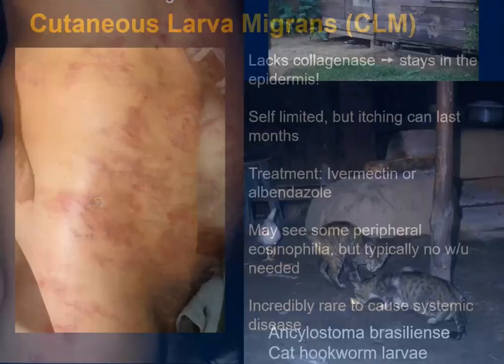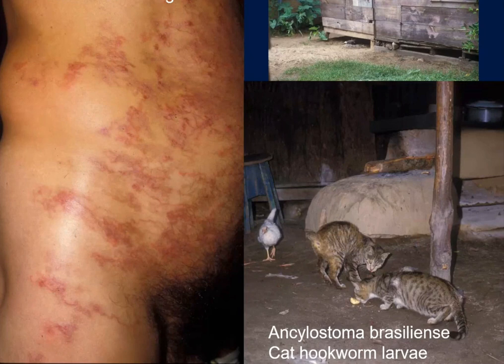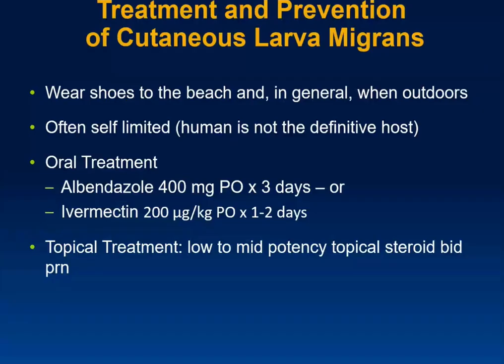Systemic disease from cutaneous larva migrans is really uncommon unless the patient is immunocompromised. Here is a man from Costa Rica who crawled under a shed to retrieve his cats and later developed lesions all over his abdomen — this was Ancylostoma braziliense, a cat hookworm, slightly different from the dog hookworm. Obviously, if you're out on the beach where dogs have been, it's probably a good idea to wear shoes.